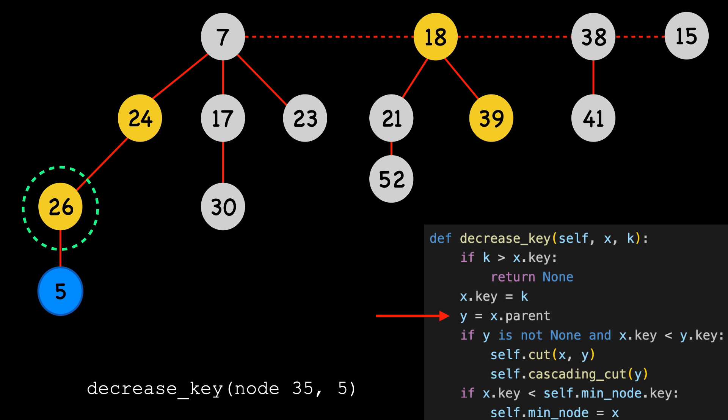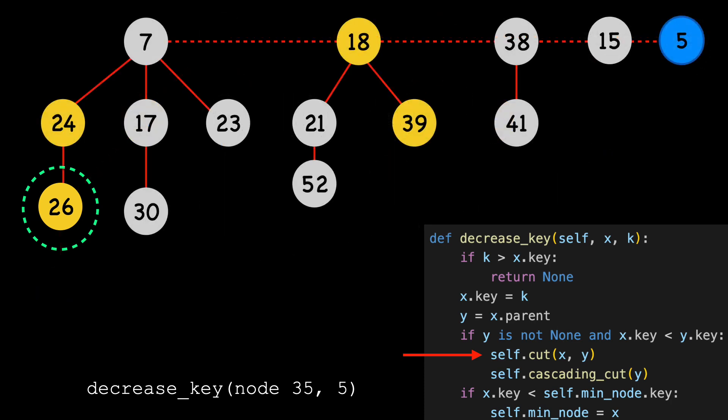We can see that our min heap property is broken, so we cut 5, moving it to the end of the root list. This is the same heap, just shifted over. We now call cascading cut on Y.